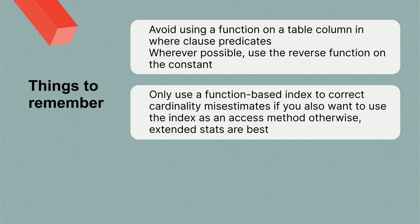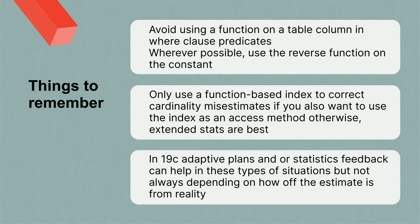Now in 19c, you'll start to see things like adaptive plans or statistics feedback trying to help in situations like this. And depending on how off the cardinality estimate is, some of those safety nets may be able to catch and fix the problem for you, but I wouldn't rely on those. If you see this kind of pattern in your particular workload or in your queries, you are better off to put those extended statistics in place to solve the problem.